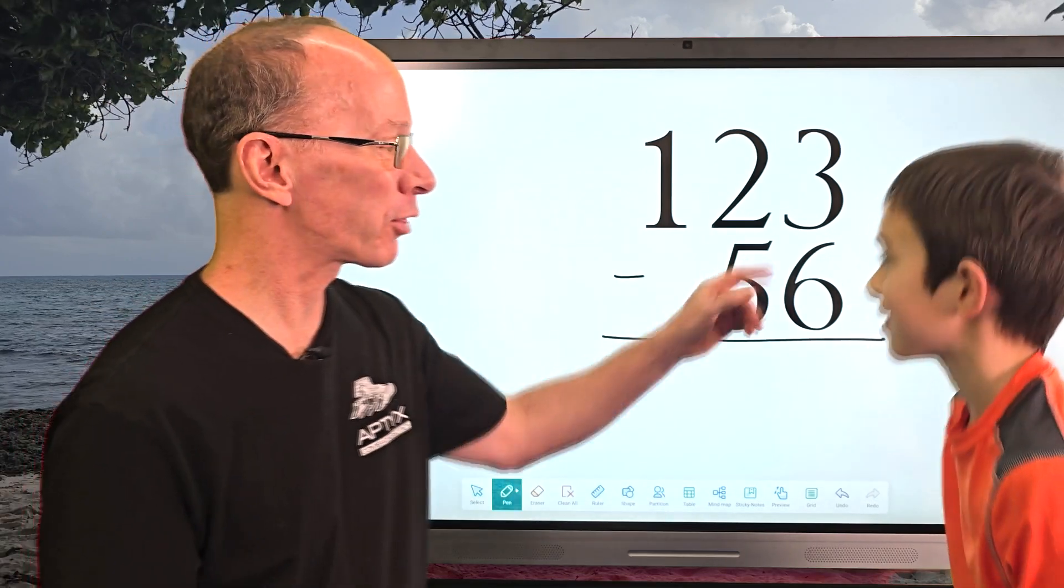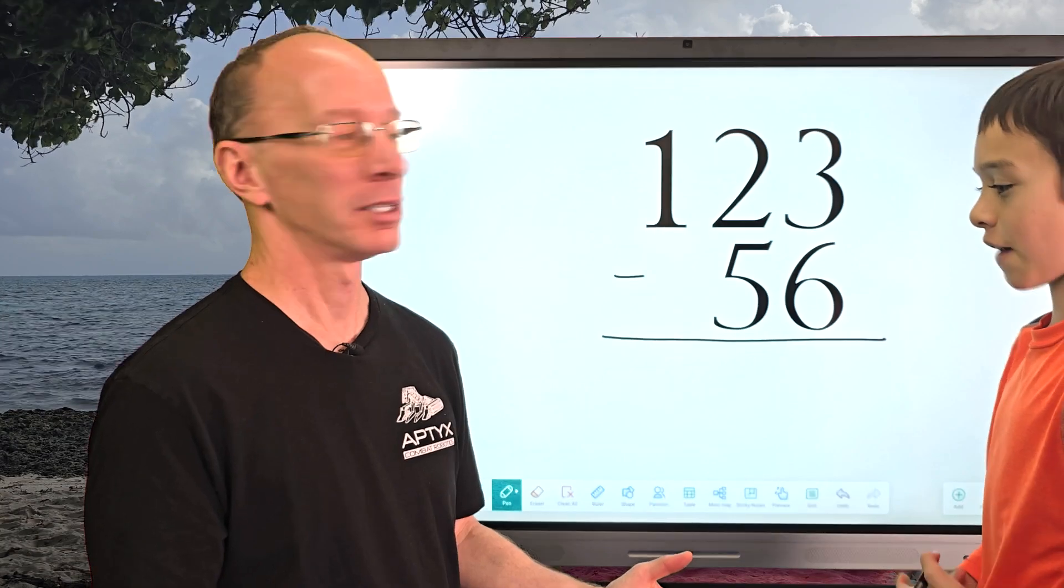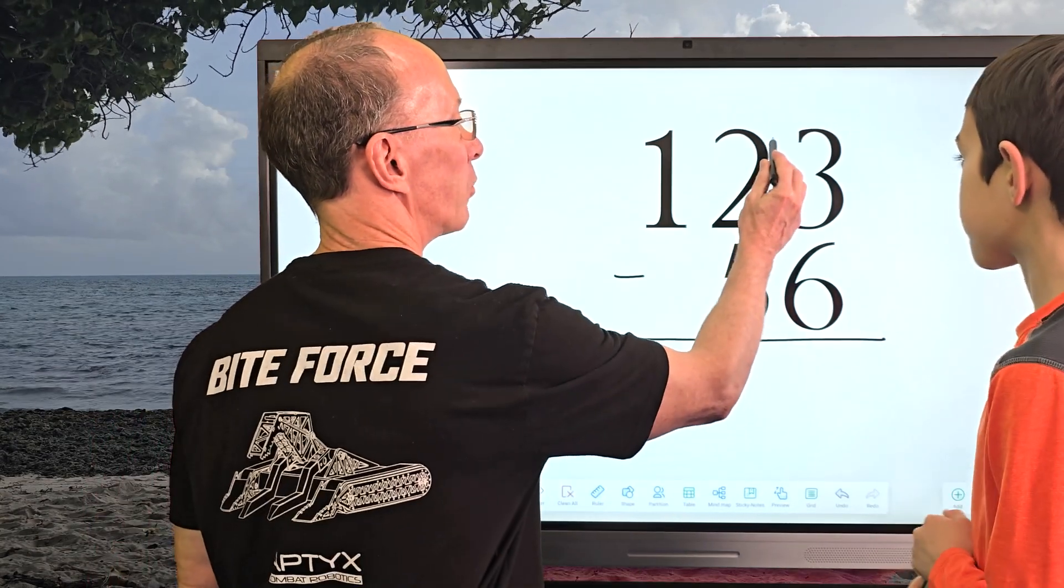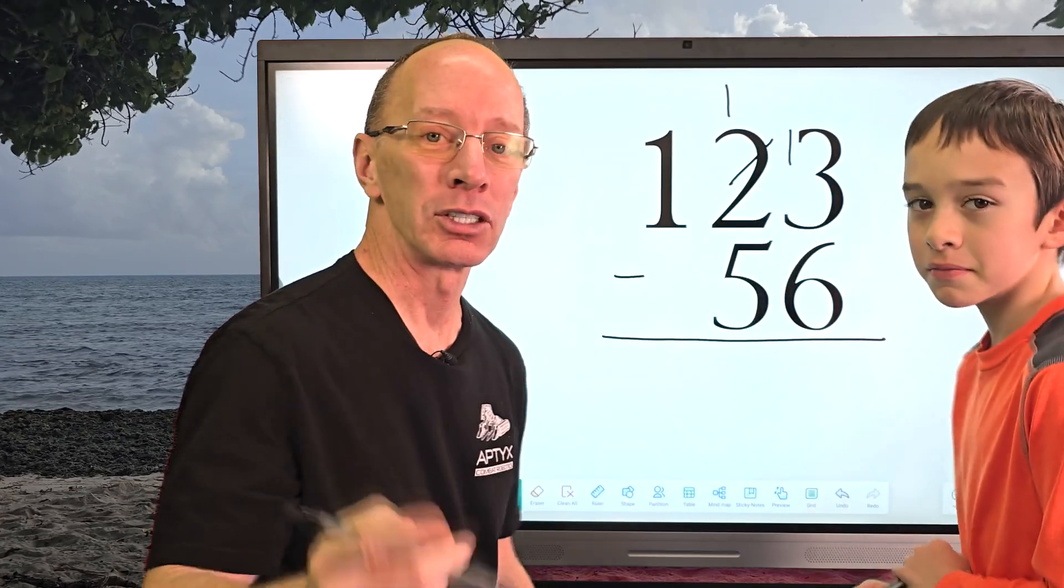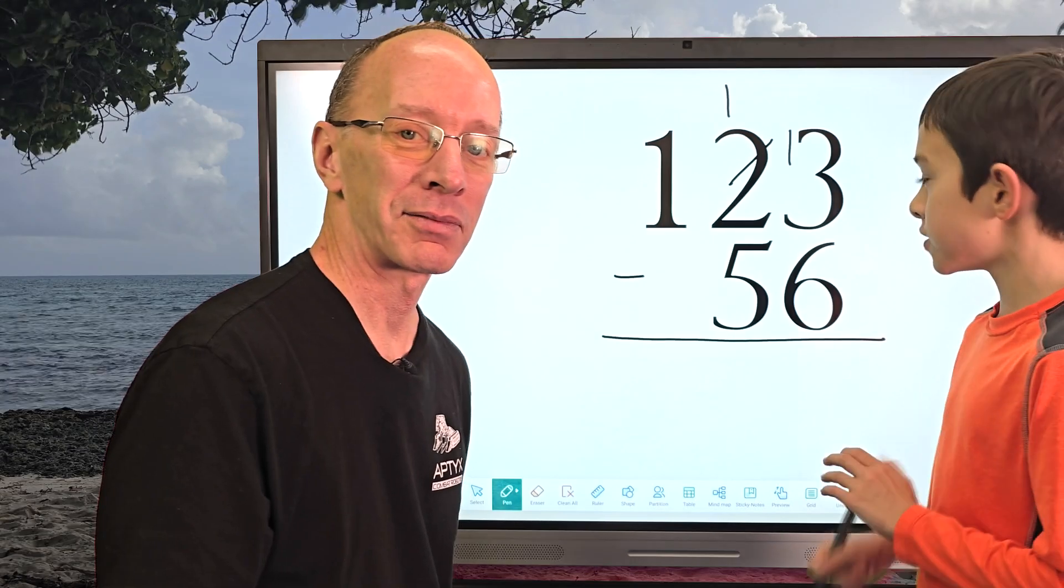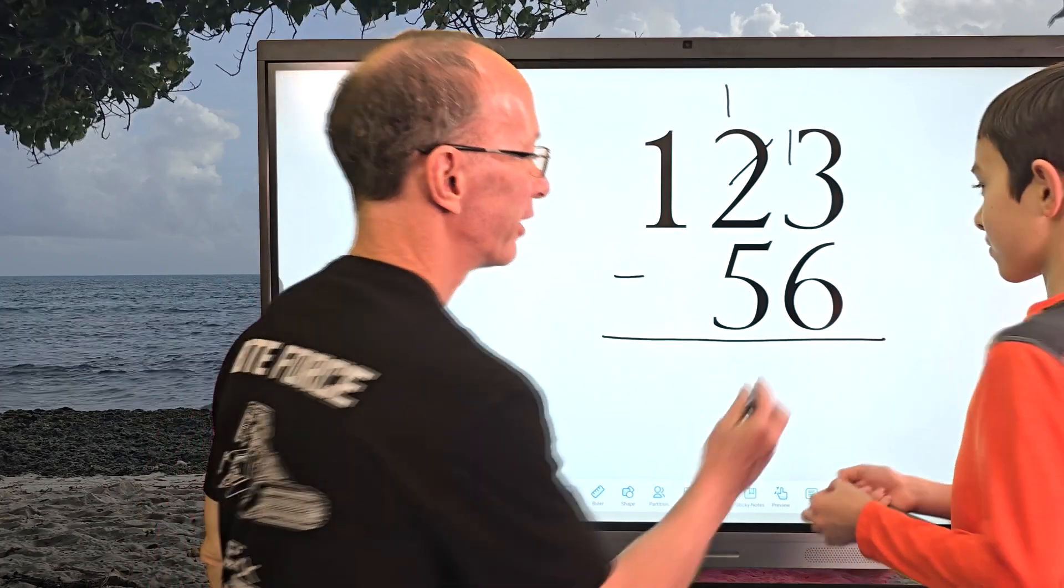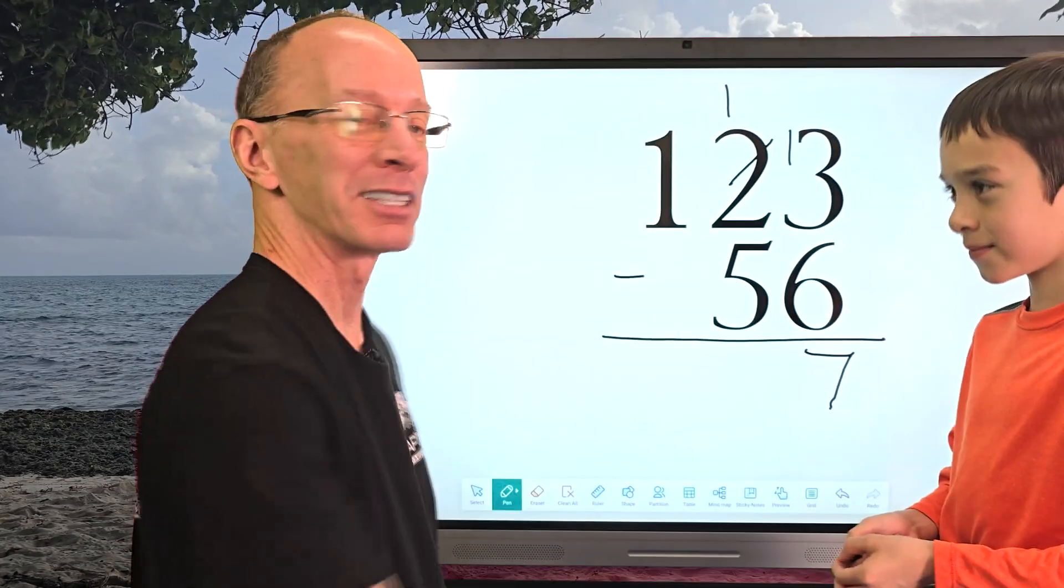What is three minus six, Lucas? Do you know? You can't do it. I need to do what? You have to borrow. Need to borrow. So let's go ahead and borrow here. Take one from the two, which will be a one. And now I have a three. So what is 13 minus six? 13 minus six equals seven. So let's go ahead and put seven right here.